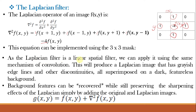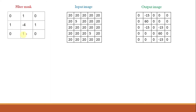As the Laplacian filter is a linear spatial filter, we can apply it using convolution. This will produce a Laplacian image that has grayish edge lines and other discontinuities superimposed on a dark featureless background, because we highlight only specific details and make all other values 0 or near 0. To recover background features while preserving sharpening, we add the original image and the Laplacian image: g(x,y) = f(x,y) + ∇²f(x,y).